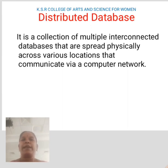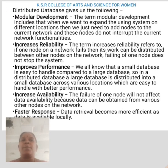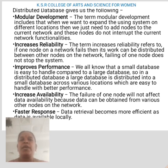Distributed database: it is a collection of multiple interconnected databases that are spread physically across various locations and communicate via a computer network. Distributed databases provide modular development — when we want to expand the existing system to different locations, we just need to add nodes to the current network, and these nodes do not interrupt the current network functionalities. Increased reliability: if one node on a network fails, the network can be distributed between other nodes, so the failure of one node does not stop the system.